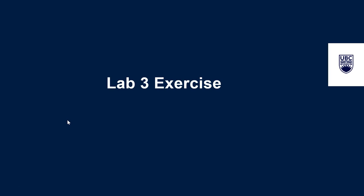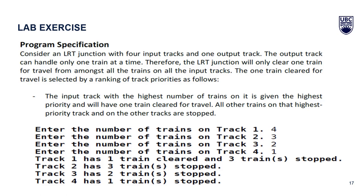Now let's talk about what is required in the lab 3 exercise. Consider an LRT junction with four input tracks and one output track. The output track can handle only one train at a time, so the junction will only clear one train for travel from all the trains on all input tracks. The input track with the highest number of trains is given the highest priority and will have one train cleared for travel; all other trains are stopped.